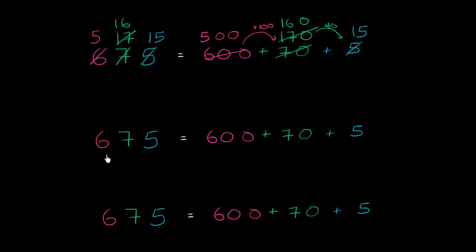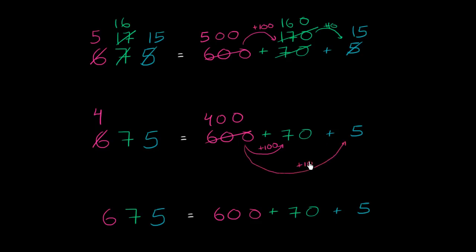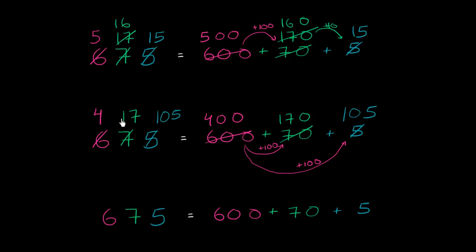Let's do another scenario — something different. Let's take 200 from the hundreds place, so the hundreds place becomes 4, representing 400. Let's give 100 to the tens place, making it 170, or 17 tens. And let's give another 100 to the ones place — I had 5, now add 100, so it's 105. And notice: 400 plus 170 plus 105 still equals 675.